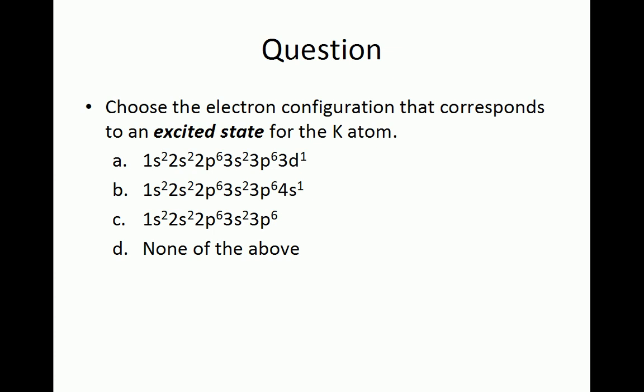An atom is in an excited state when one or more of its electrons occupies an orbital that would require a greater amount of energy for it to occupy. This could manifest as an electron being placed in a subshell that is higher in energy than the one it would occupy in its ground state, or an electron being paired in an orbital when there are vacant degenerate orbitals.